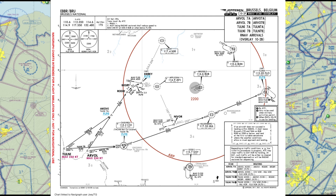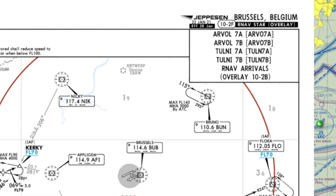Just like last time, we are going to go over all the different information on this chart, and then at the end I'll give you a brief overview of how exactly you should interpret that info. Starting at the top again, we have the unique designation of the chart to make it easier to find and to verify you have the right procedure in front of you. This here is the specific type of chart you are using — in this case it's an RNAV arrival, so it makes use of GPS waypoints.